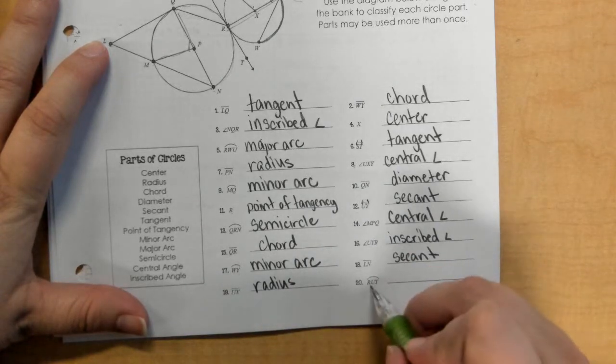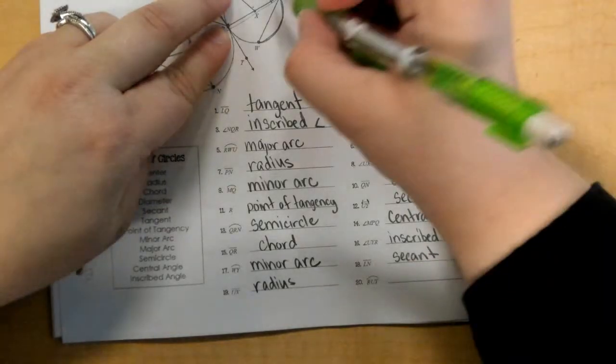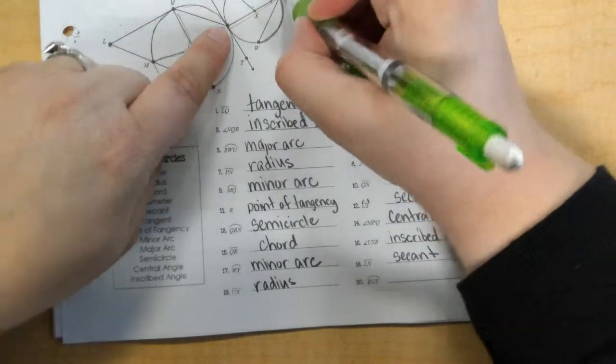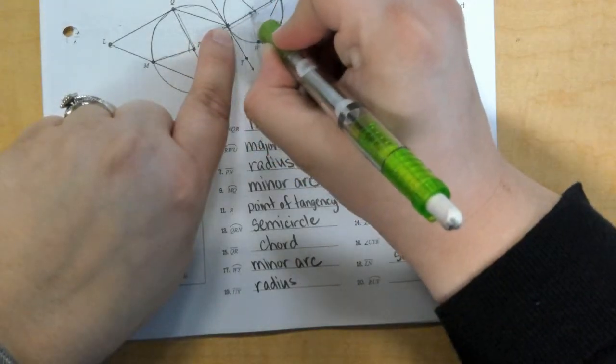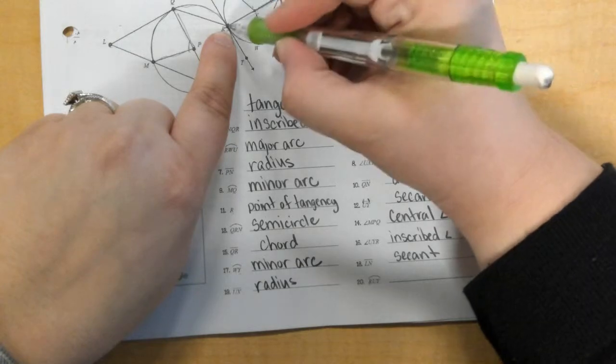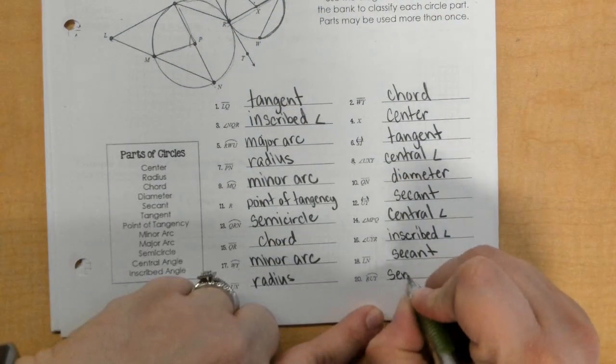And lastly, arc RUY. So here's R, U, Y, and here we have our diameter. So we know that R and Y are our points of the diameter. RUY is half of the circle, so it's a semicircle.